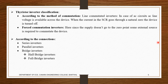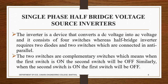We will start with the half bridge inverter in the next slide and discuss the full bridge inverter in the next video. One basic thing: if you understand the half bridge inverter properly, the full bridge inverter is easy to analyze. The single-phase half bridge voltage source inverter is a device that converts DC voltage into AC voltage. A full bridge inverter consists of four switches, whereas a half bridge inverter requires two diodes and two switches connected in anti-parallel.